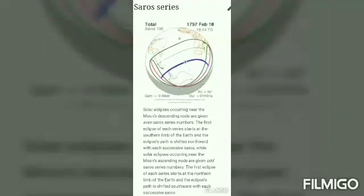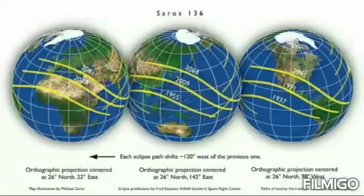This indicates that the Saros period is not an integer number of days, but contains a fraction of one-third of a day. Thus, each successive eclipse in a Saros series occurs about 8 hours later in the day. In the case of an eclipse of the Sun, this means that the regions of visibility shift westwards about 120 degrees — about one-third of the way around the globe — and the two eclipses will not be visible from the same place on Earth. In the case of an eclipse of the Moon, the next eclipse might still be visible from the same location as long as the Moon is above the horizon.